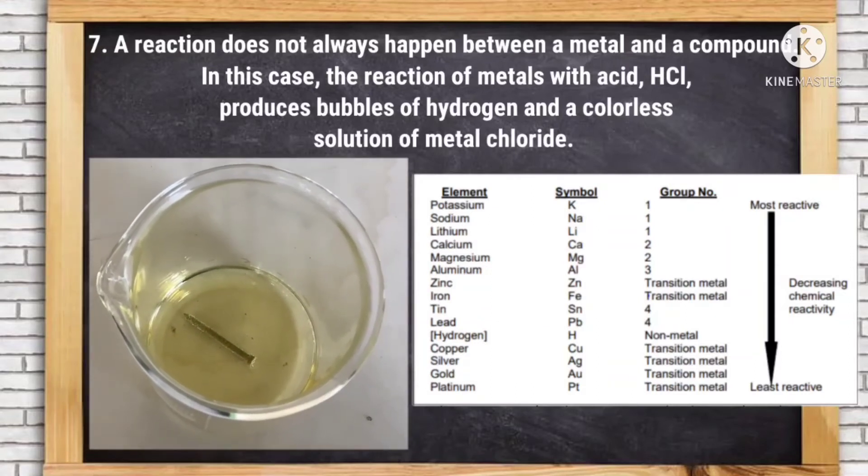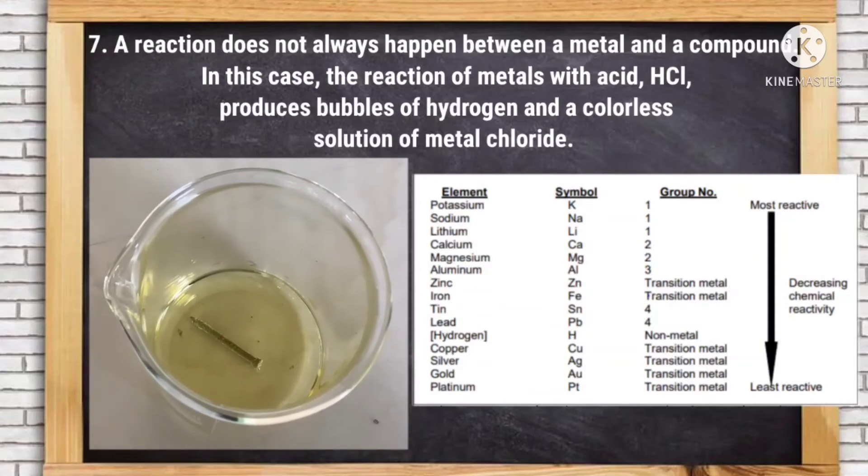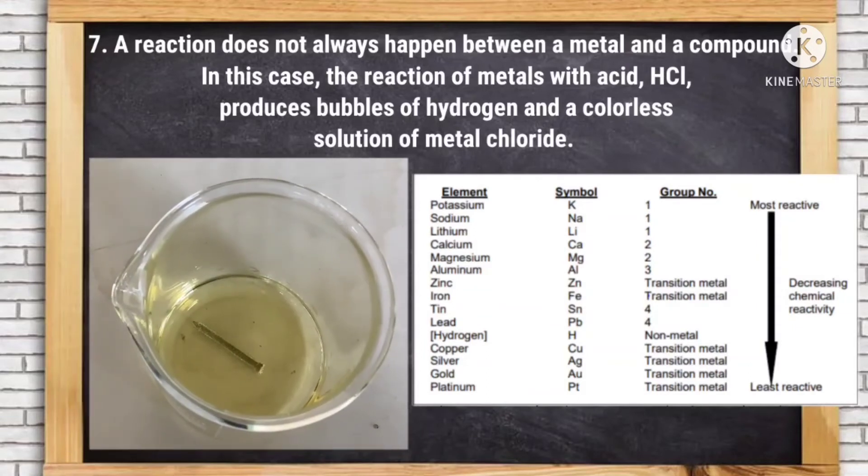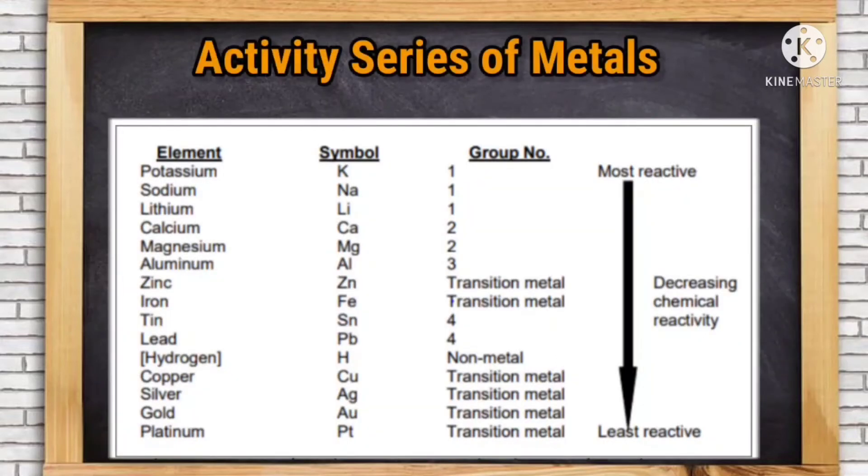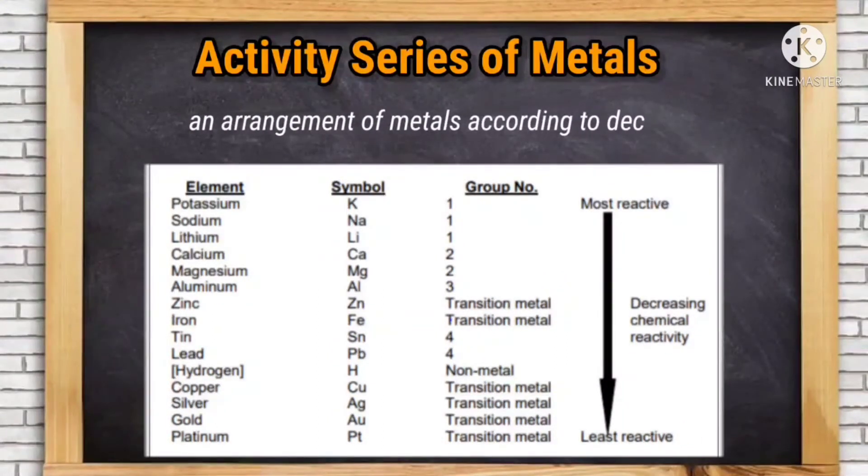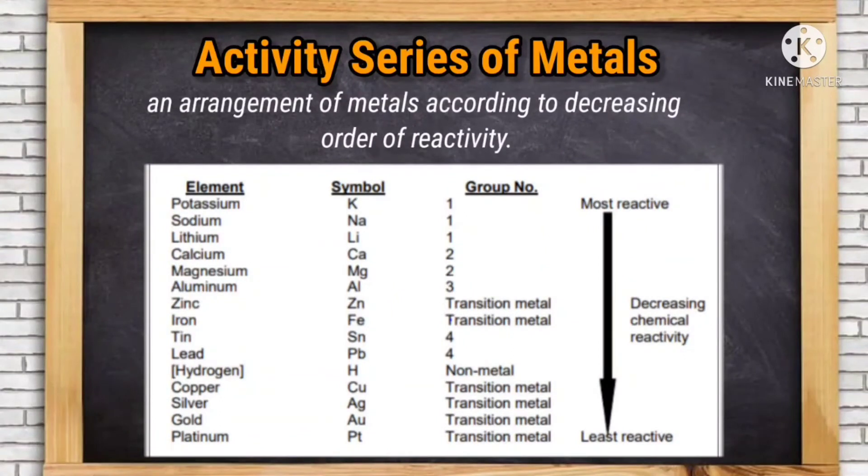There is an existing definite order of reactivity among metals and hydrogen according to their ability to displace one another. This arrangement is called the metal reactivity series or activity series of metals. The activity series is an arrangement of metals according to decreasing order of reactivity.